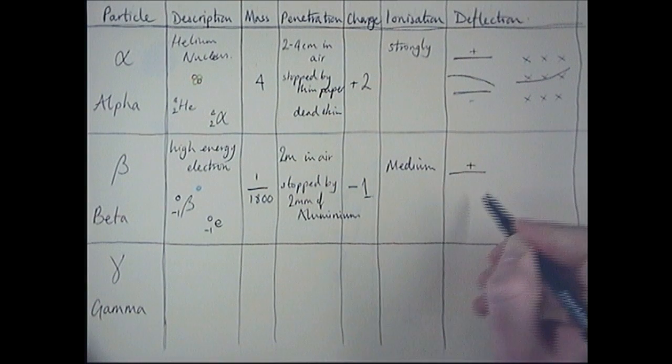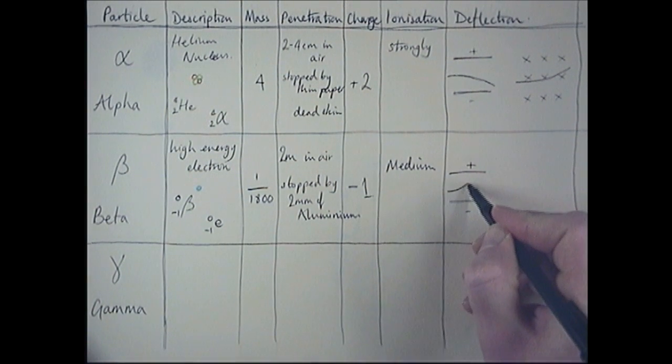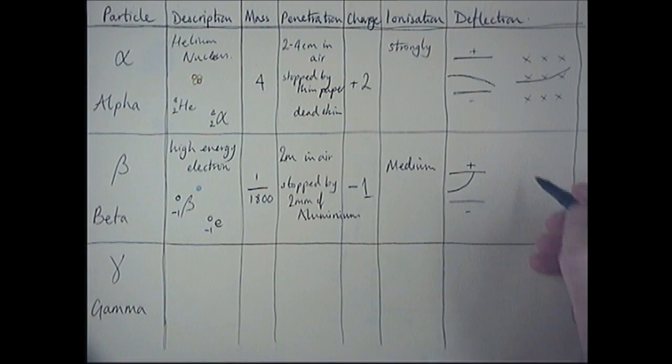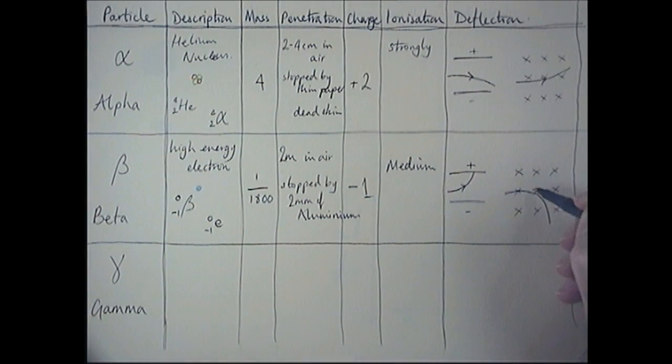Its deflection, because it is negative, it will be deflected towards the positive side in an electric field. And you can see it's got more of a deflection than the alpha particle, and that is because it's got less of a mass. Similarly, in a magnetic field, it's going to be deflected more than the alpha particle, and because of the opposite charge, it's going to be deflected in the opposite direction. I'm just going to add little arrows on this so that you know which direction the thing is moving.